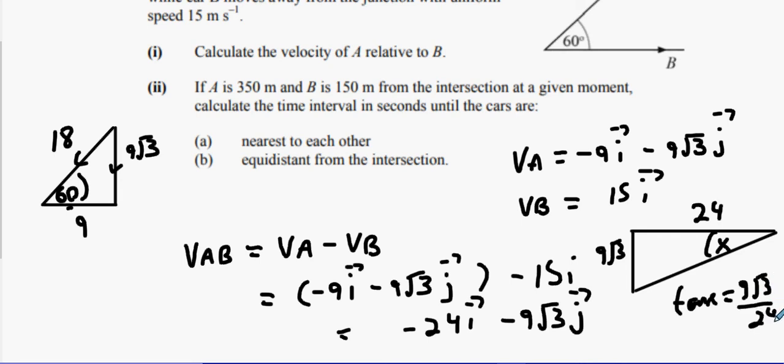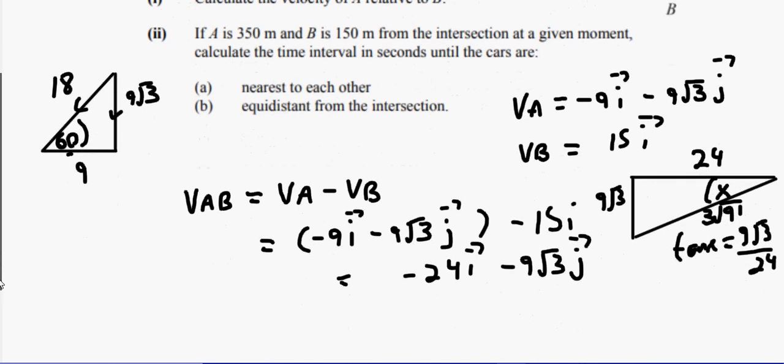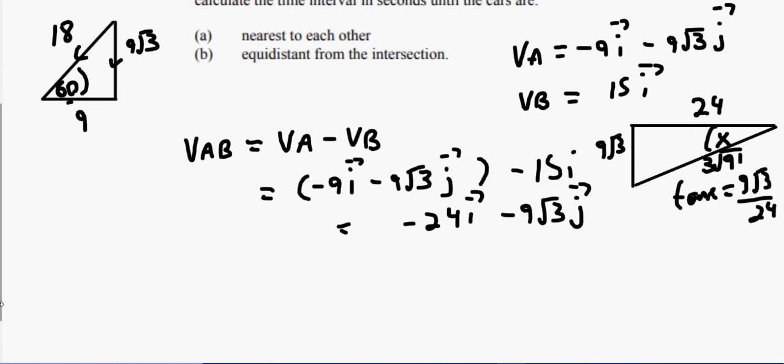I'm going to finish off the hypotenuse of that triangle. So it's 24 squared plus 9 root 3 squared, square root the answer. 3 root 91 for the hypotenuse of that triangle. So I imagine you're all very capable of taking care of that.